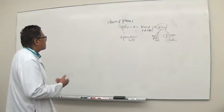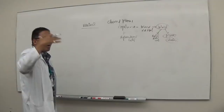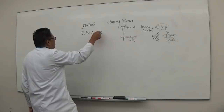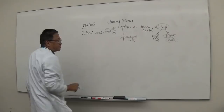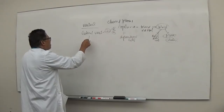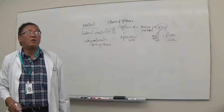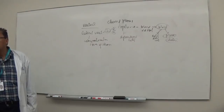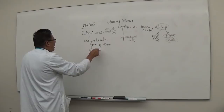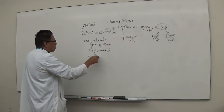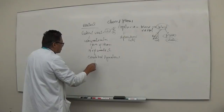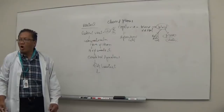Starting from the top: there are two lateral ventricles (left and right). CSF passes through the interventricular foramen of Monro into the third ventricle, then through the cerebral aqueduct of Sylvius into the fourth ventricle. From the fourth ventricle, CSF exits through openings called apertures — the two lateral apertures and the median aperture — and flows into the subarachnoid space.